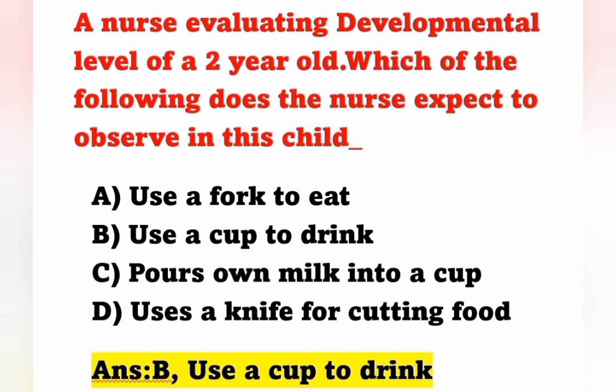By the age of three to four years, the child can begin to use a fork. By the end of the preschool period — three to five years — the child can pour milk into a cup. By the end of preschool, the child can also begin to use a knife for cutting. So Option B, use a cup to drink, is the correct developmental milestone for a two-year-old.